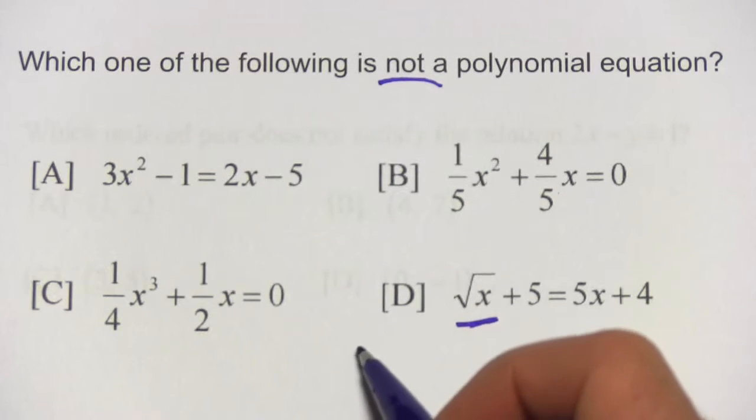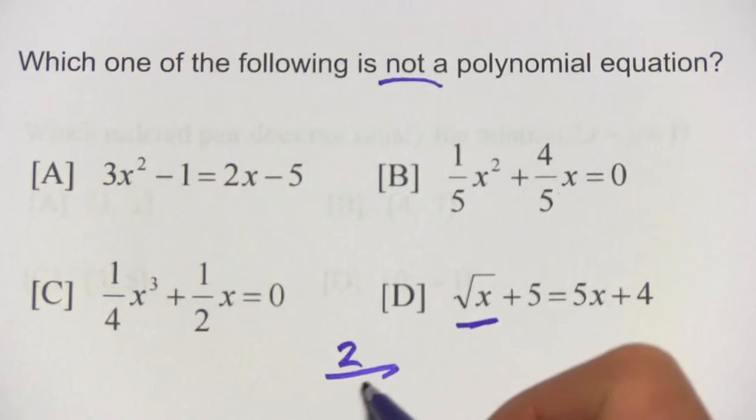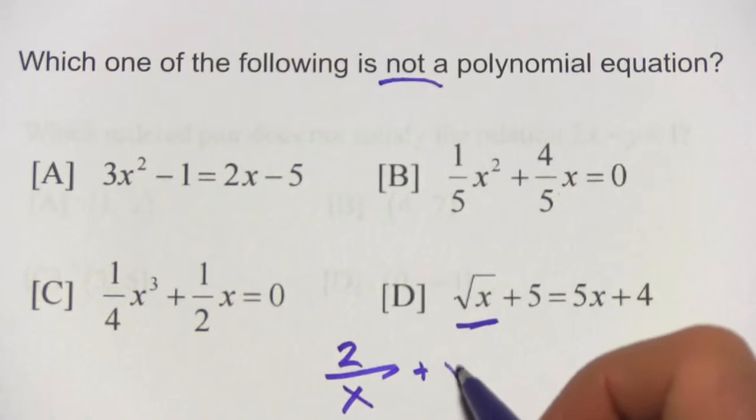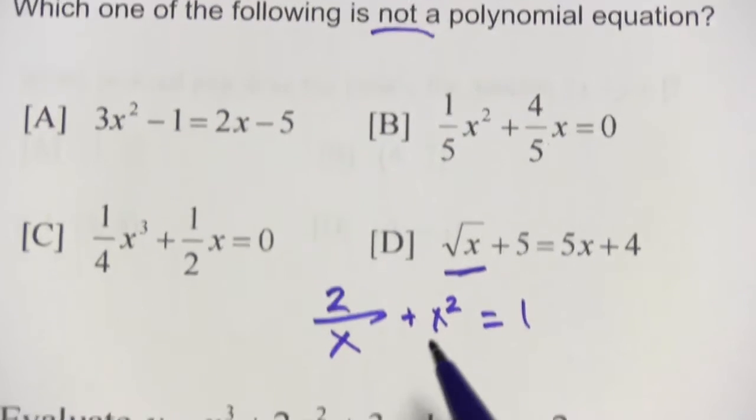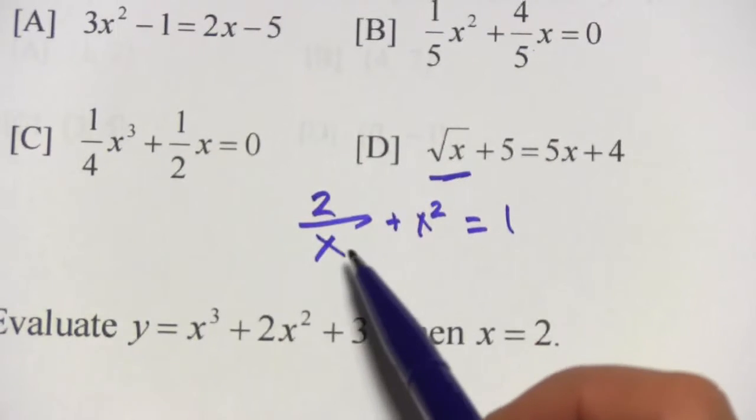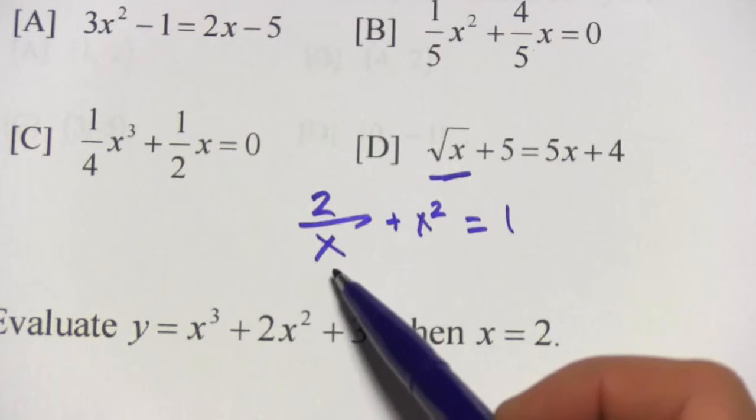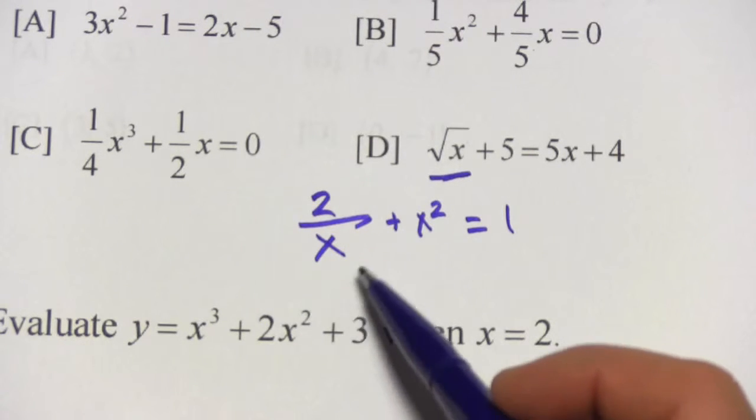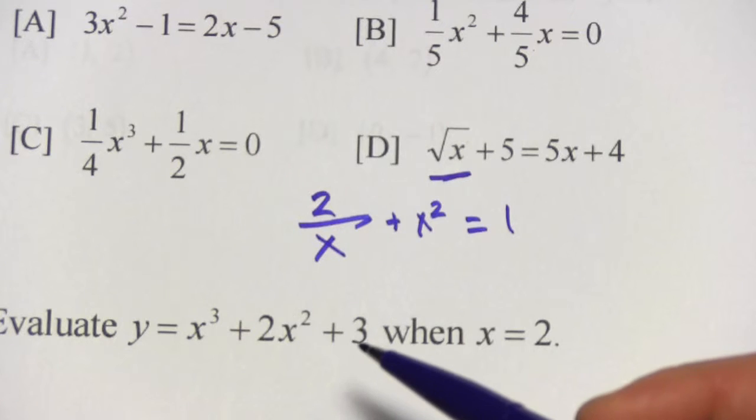Another thing to look out for is a situation like this. Let's say we have 2 over x plus x squared equals 1. This is a different beast entirely. Because the x is the denominator of a fraction, this becomes what's called a rational equation. It is not a polynomial equation.